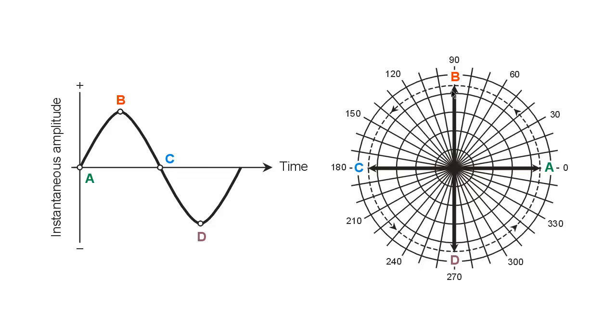That coincides in this drawing to the vector B pointing straight up, 90 degrees. So as we move along the curve from A to B, this vector maintains its length, but it rotates counterclockwise at a constant angular speed until we get to the 90 degree point.